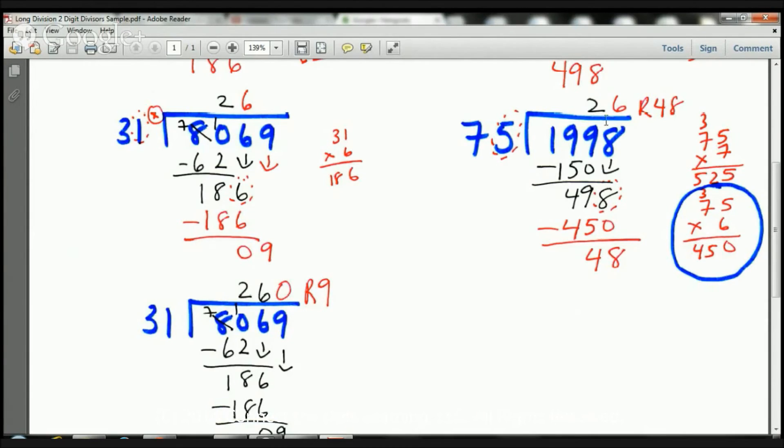So 75 times 6, let's put the 6 there, equals 450. Let's put 450 there. Our minus sign, our line, and now let's subtract. 8 take away 0 is 8. 9 take away 5 is 4. So our answer is 26 remainder 48. And that's it, boys and girls. That's it.